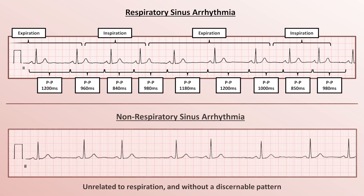Contrast that with non-respiratory sinus arrhythmia, in which there is significant beat-to-beat variation in the p-to-p interval that does not have any discernible pattern. Important to note is that all of the p-waves have the same morphology, implying that they are all originating from the same focus, presumably the sinus node. Both types of sinus arrhythmia are more pronounced and usually easier to identify at slower rates.